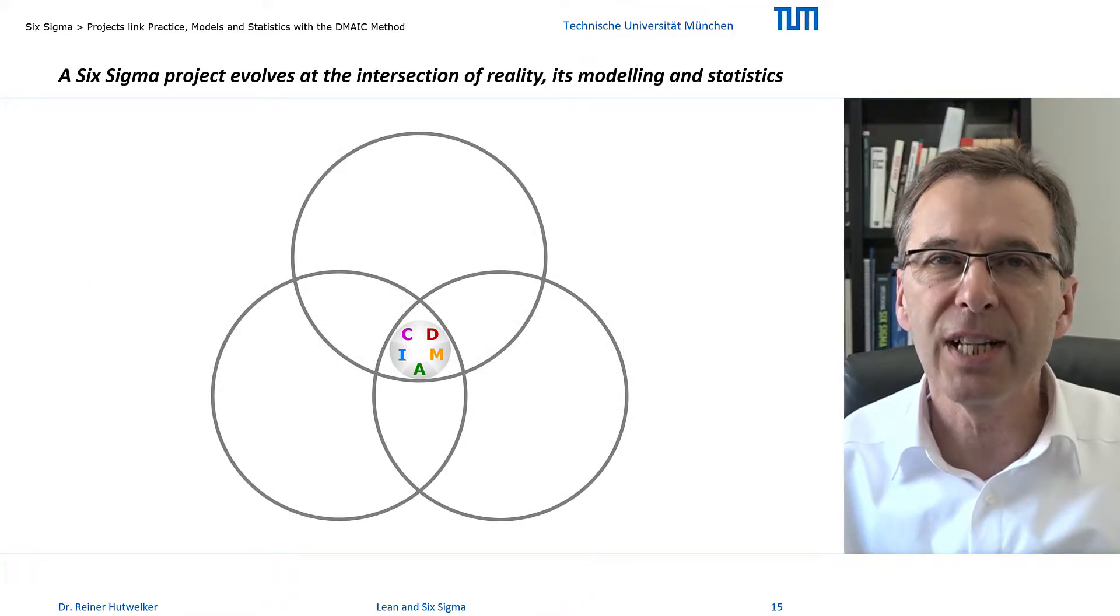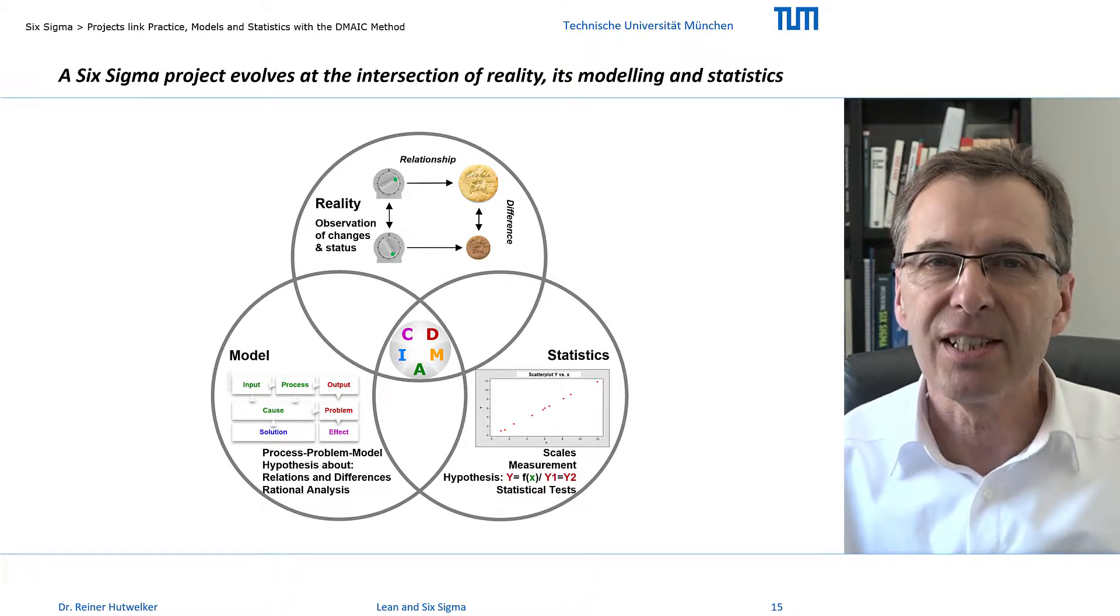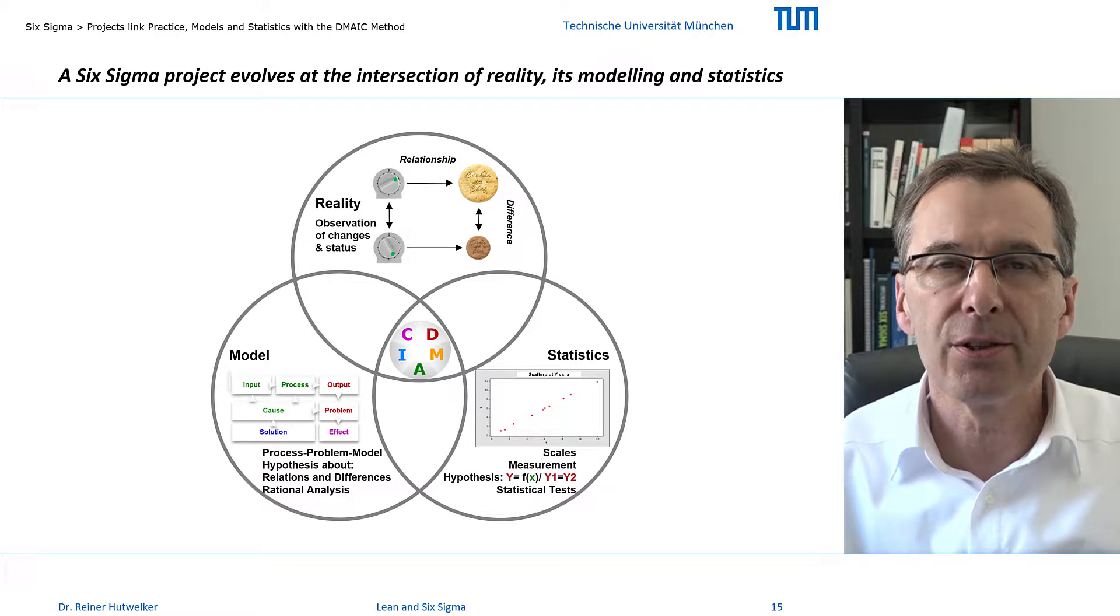A Six Sigma project evolves at the intersection of reality, its modeling and statistics. The reality is the source for our project topics. Here we observe the status and change of objects.